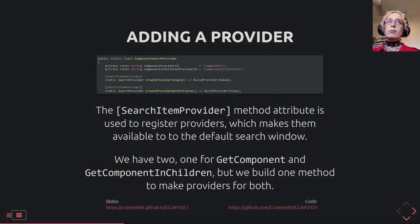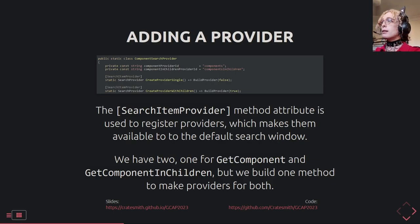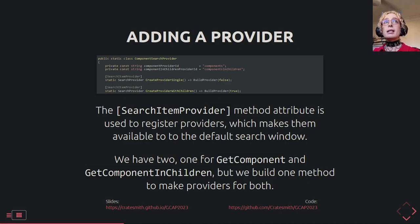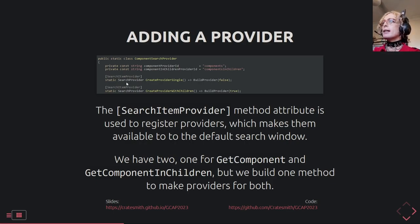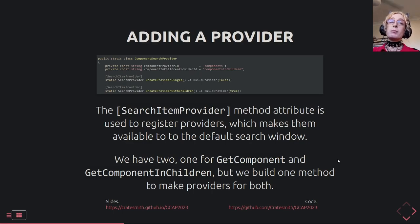We're going to start building this provider. This is the top of the class for adding a provider — it's a static class. These provider things aren't classes you override; you basically create one and return it. In our case we're creating two: the GetComponents one and GetComponents in children. They share most of their functionality — there'll be one function for everything, with stubs to pick which version we're using.